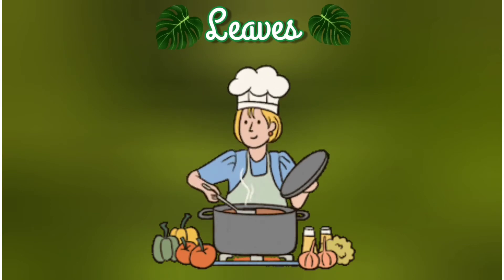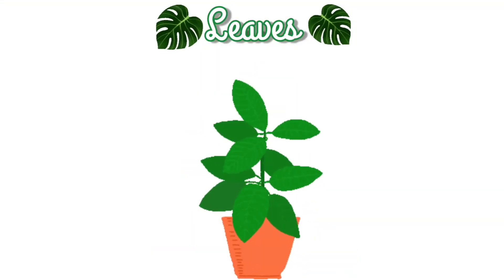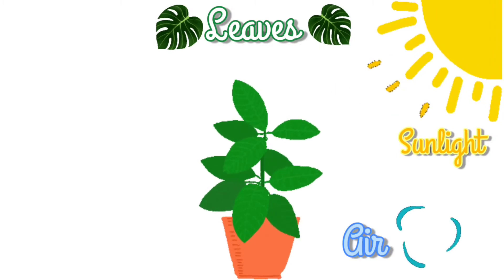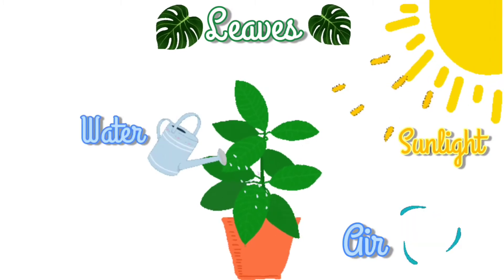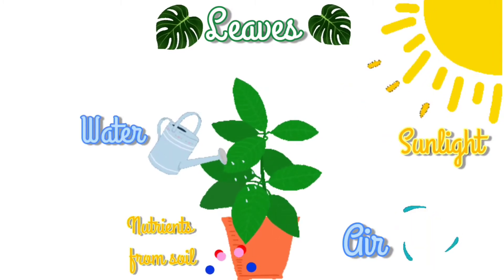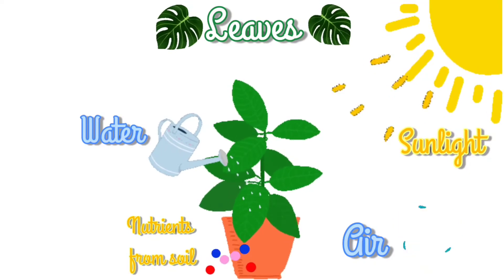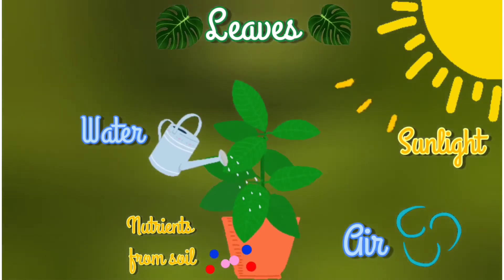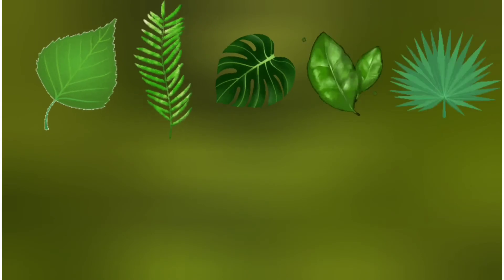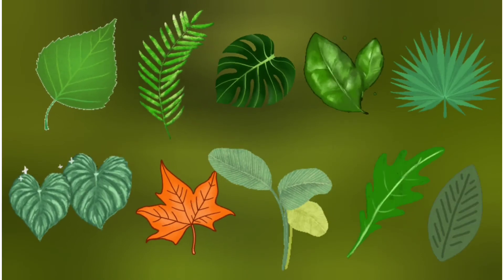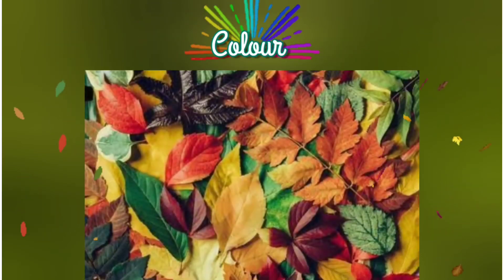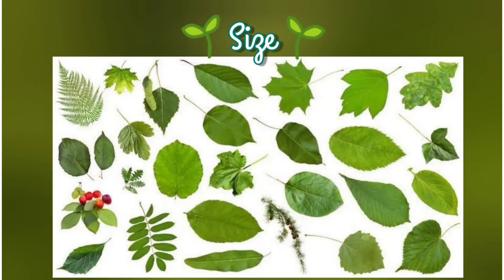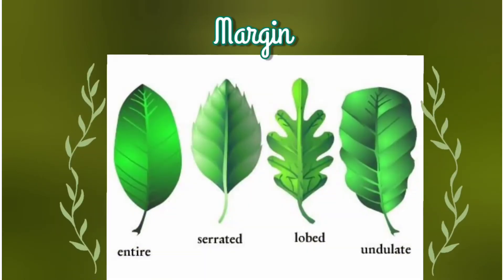But the leaves use sunlight, air, water, and nutrients to prepare a special type of food inside the leaf. Leaves of different plants are different in color, shape, size, and margins.